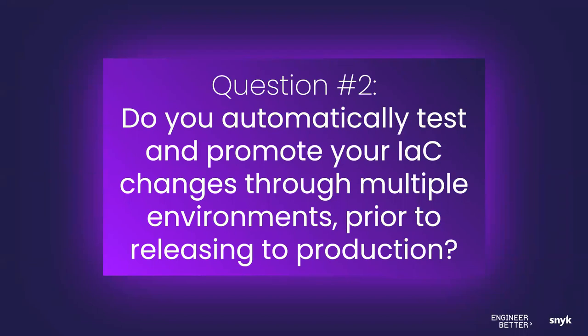Looking at the poll results, interestingly zero people said they're fully automated with multiple stages all the way through production. A few said they're close but not quite all the way through. Before we did the book, we had commissioned a survey of IaC users to see where they were in their journeys — only about 6% or 7% of the 500 respondents said they thought they were doing best-in-class IaC automation, testing, security, and management all the way through. So if you're in the group of people who said zero, which is everybody joining us today, don't feel like you're way behind — it's fairly common, people are still working toward that.